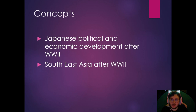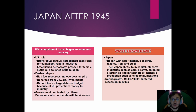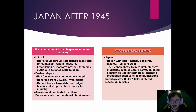Our concepts for today are Japanese Political and Economic Development after World War II and Southeast Asia after World War II. Starting with Japan after 1945: America won World War II when they dropped the atomic bomb on Hiroshima and Nagasaki. After World War II, America occupied Japan and helped create a stable democracy. At first, America broke up the Japanese zaibatsus — large factory combines that are huge industrial centers including multiple goods.